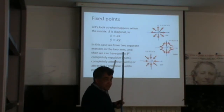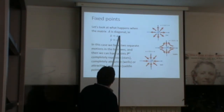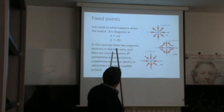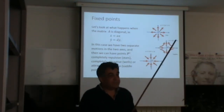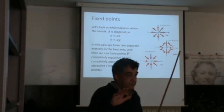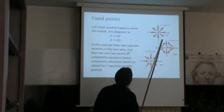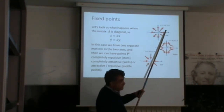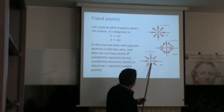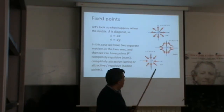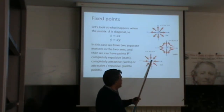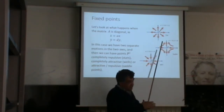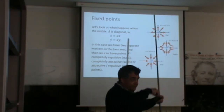What kind of fixed points do you expect for two-dimensional systems? Fixed points means having both derivatives equal to zero. In the very simple case where the system is completely separable — two uncoupled one-dimensional systems — you can have divergence in both directions (an unstable star), convergence in both (a stable well), or divergence in one and convergence in the other (a saddle, like a ball on a saddle).